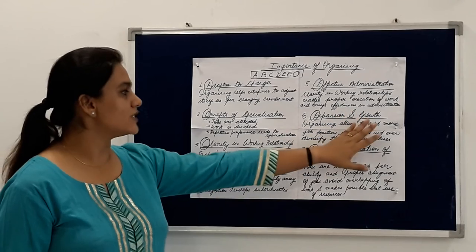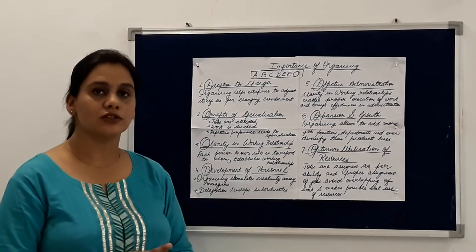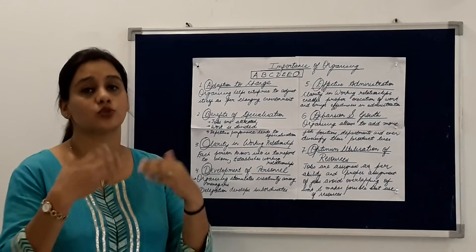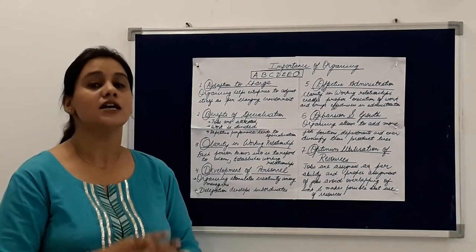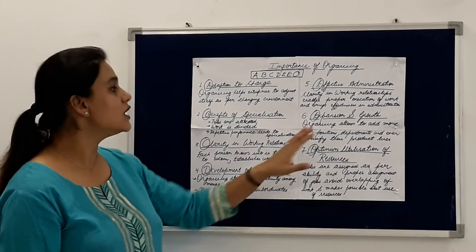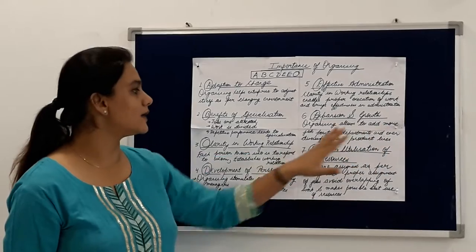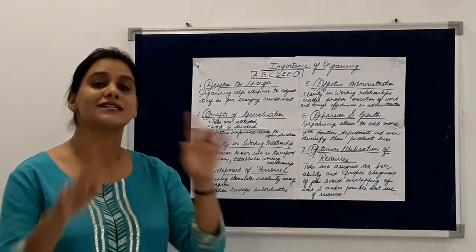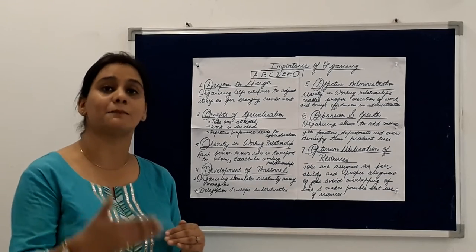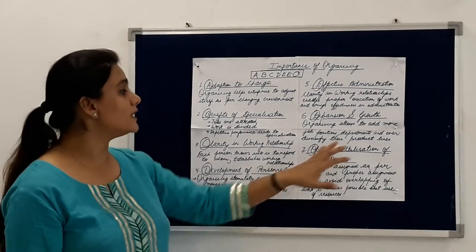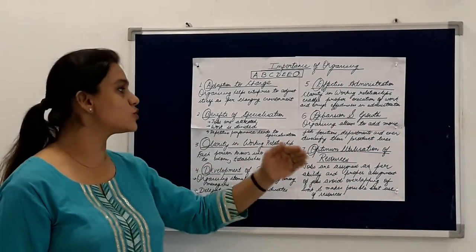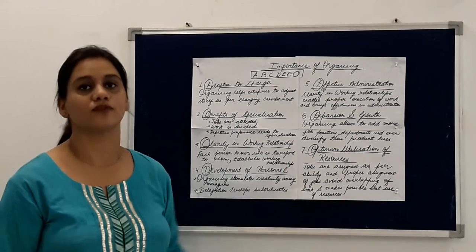The sixth is expansion and growth. We can add more lines of products through organizational structure, which leads to expansion and growth of the organization. Organizing allows adding more job positions and departments in the organization structure, and when these job positions and departments are added when there is diversification of the product lines, this leads to expansion and growth of the organization.